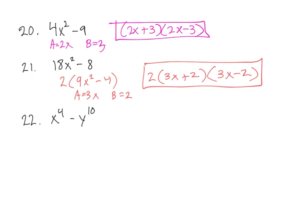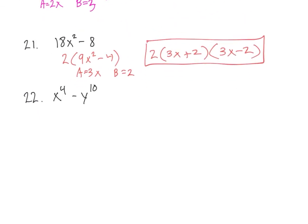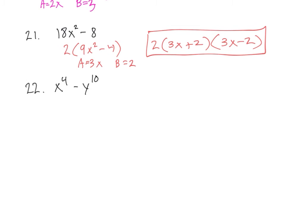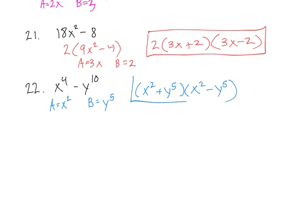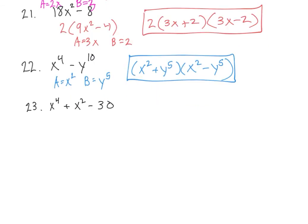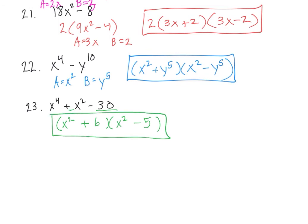Problem 22: we have two terms, so we need to decide if these terms are perfect squares or perfect cubes. In this case, they are perfect squares because they're both even powers. So my a is going to be x squared and my b is going to be y to the fifth. So we have x squared plus y to the fifth times x squared minus y to the fifth. Problem 23 is another one of these x squared to x to the fourth. We're just looking for the factors of 30 that have a difference of 1, which would be 6 and 5. Since 6 and 5 are neither one perfect squares, we are done with the factoring.